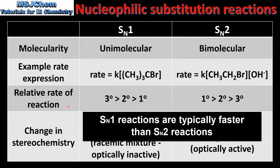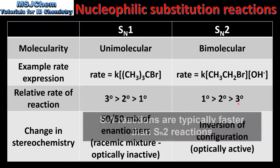Next we have relative rate of reaction. For SN1, tertiary halogeno alkanes react faster than secondary halogeno alkanes, which react faster than primary halogeno alkanes. For SN2, primary halogeno alkanes react faster than secondary halogeno alkanes, which react faster than tertiary halogeno alkanes.